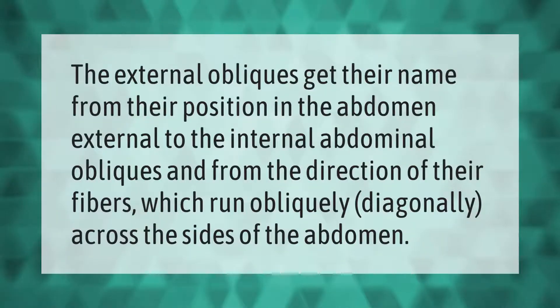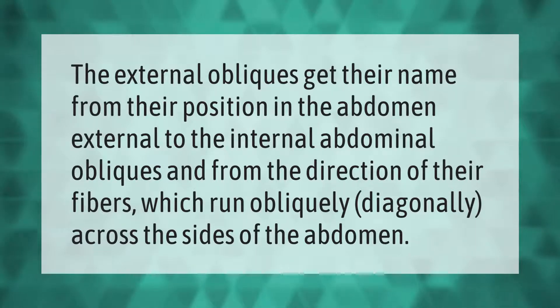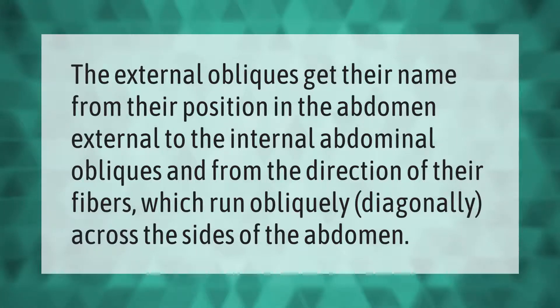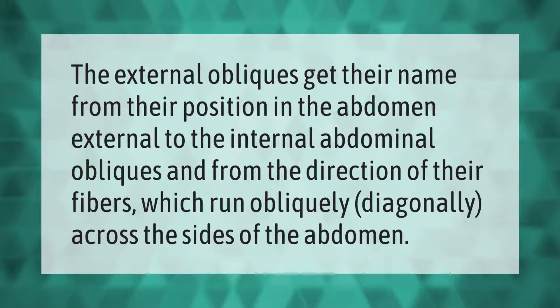The external obliques get their name from their position in the abdomen — external to the internal abdominal obliques — and from the direction of their fibers, which run obliquely, or diagonally, across the sides of the abdomen.